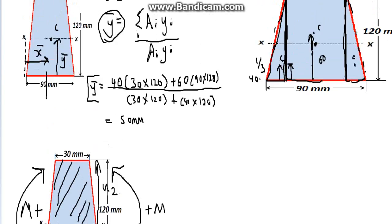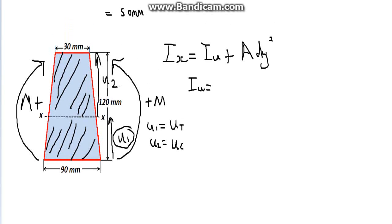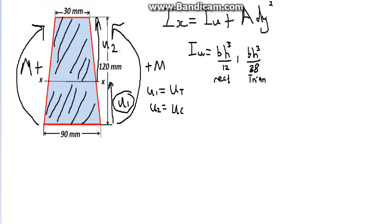The hard bit, the moment of inertia, I. This is the parallel axis theorem. Ix equals IU plus area multiplied by dy squared. Now, what is this telling us is that IU is simply base times height cubed divided by 12 for a rectangle and base times height cubed divided by 38 for a triangle. So this is for a rectangle and this is a triangle. Moving on.